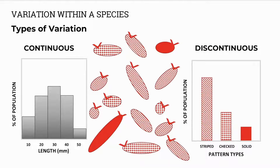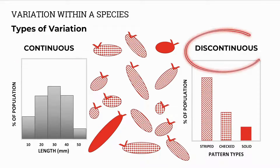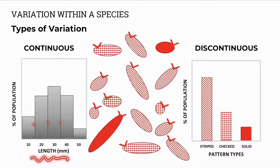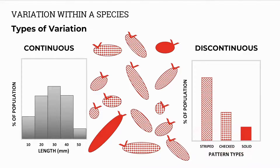Then we have types of variation. Number one, continuous. Number two, discontinuous. In continuous variation we have a continuous range of values — for example, organisms can be any length, no gaps. Discontinuous variation, on the other hand, is where the organisms are in categories. They can either be striped in pattern, or checked, or solid, and we indicate this with gaps between the data.